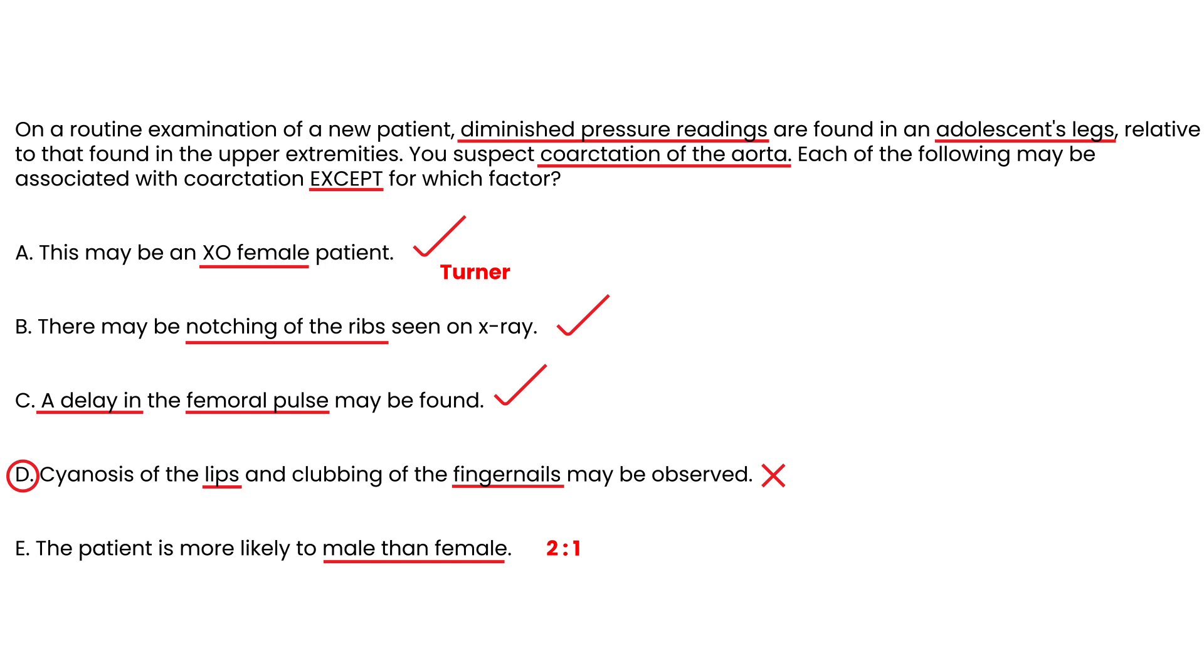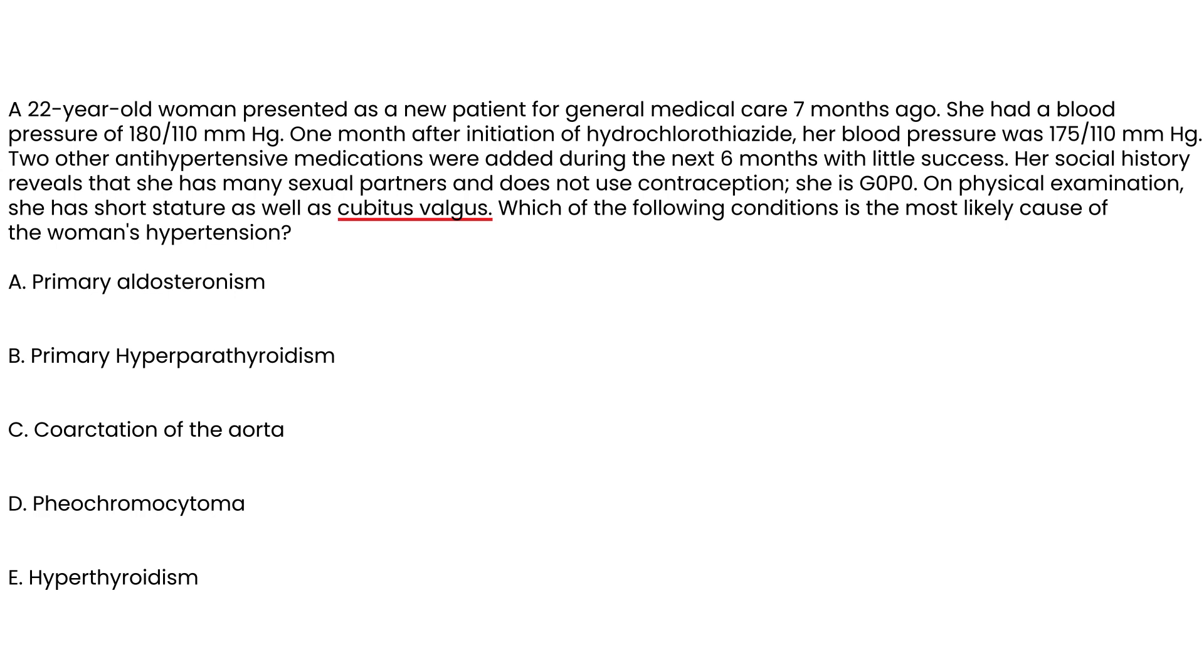Next question. A 22-year-old woman presented as a new patient for general medical care seven months ago. She had a blood pressure of 180 over 110. One month after initiation of hydrochlorothiazide, her blood pressure was 175 over 110. Two other antihypertensive medications were added during the next six months with little success. Social history reveals she has had many sexual partners and does not use contraception. She has G0P0. Physical exam shows she has short stature as well as cubitus valgus. Which of the following conditions is most likely cause of the woman's hypertension?